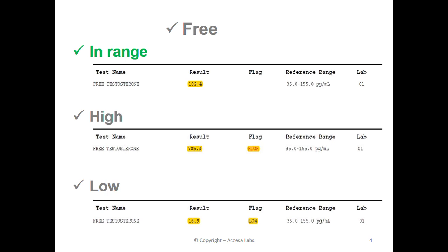Lastly, we will look at the free testosterone and examine the different numerical results. You can find the numerical result here. This sample report has a result of 102.4. Based on Quest Diagnostics reference range shown here, any result between 35 and 155 implies that a person with this result is within the reference range.